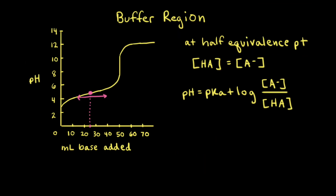During the titration of a weak acid with a strong base, a buffer solution is actually formed. The buffer region occurs around the half equivalence point, where there are very small changes in pH as hydroxide anions are added. That's because the weak acid present in solution neutralizes the added base and protects against a dramatic change in pH.